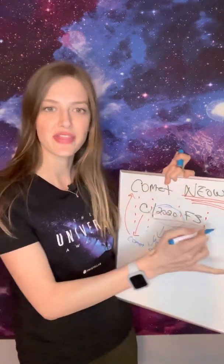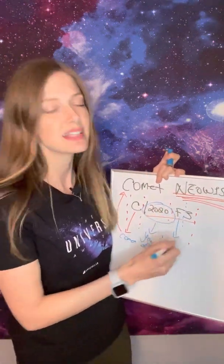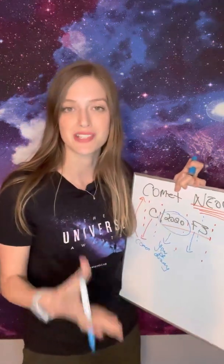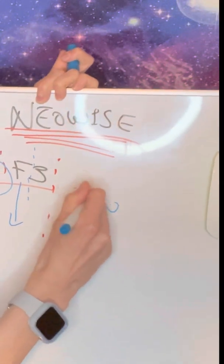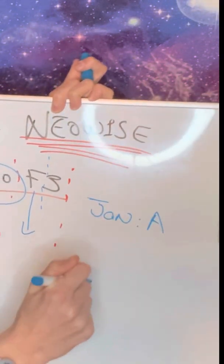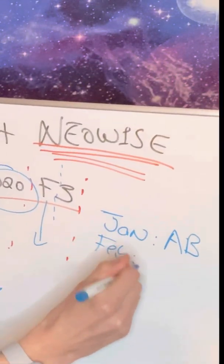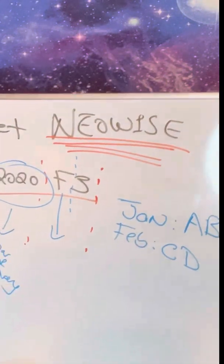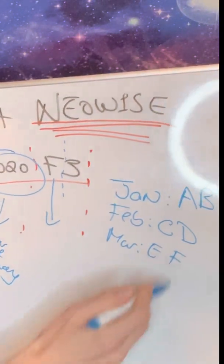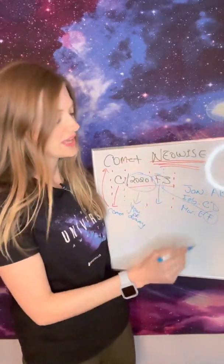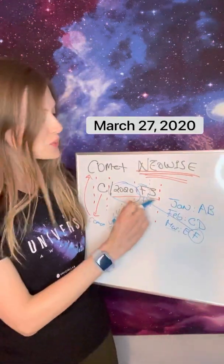Next we have 'F' and then '3', so let's break those into two parts. The 'F' is a designated letter depending on which half of the month the comet was discovered in. January gets 'A' for the first half and 'B' for the second half; February gets 'C' and 'D'; March gets 'E' for the first half and 'F' for the second half — so 'F' means it was discovered in the second half of March.